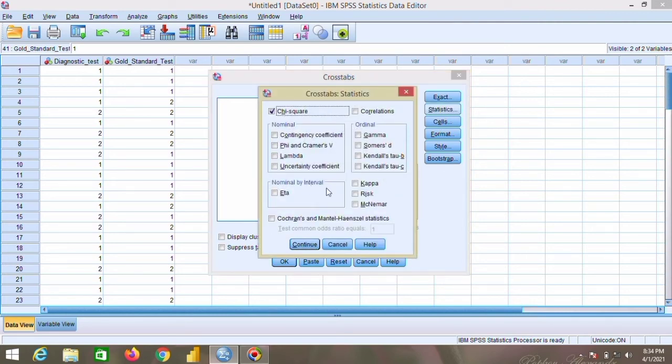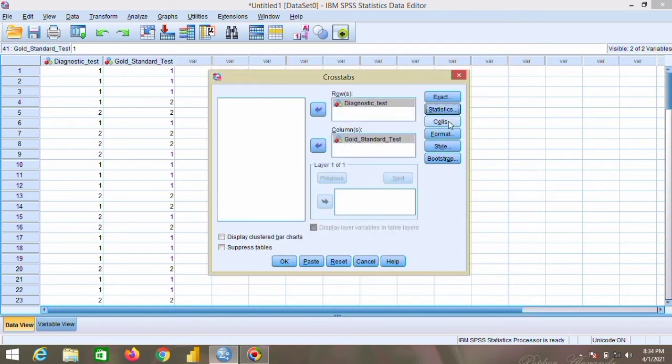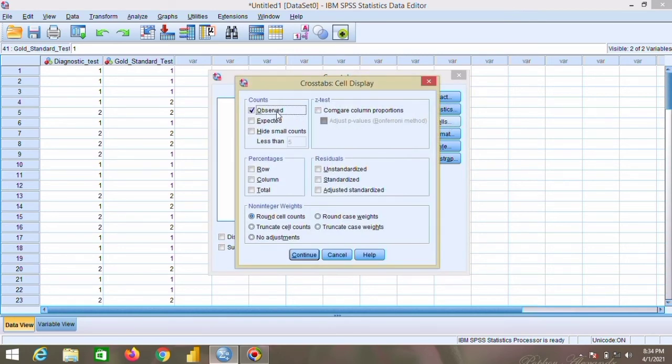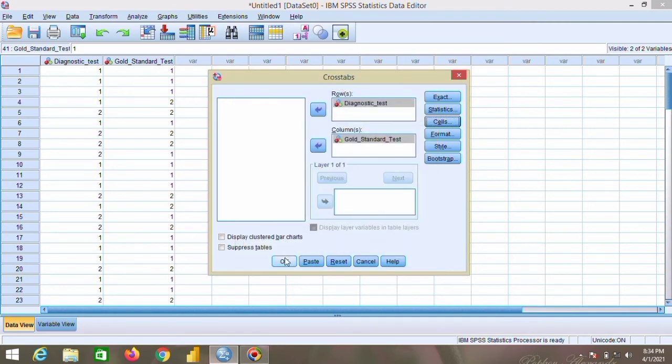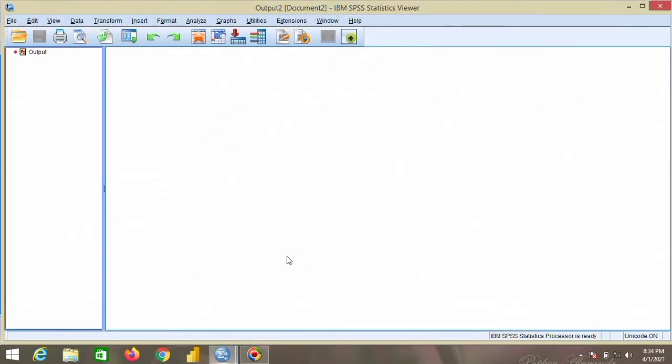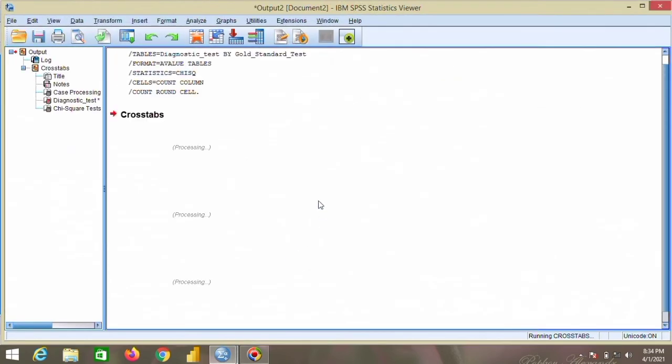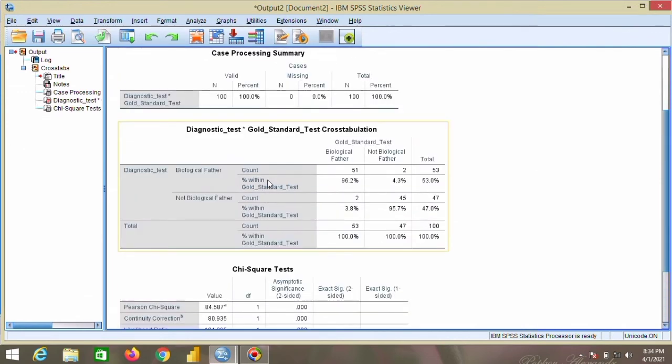On the cells you have to give Observed, and on the Percentages you have to give Columns. You have to always remember it should be on Column, don't give on Row, it should be on Column. Click on OK. Our cross tabs will be provided here.